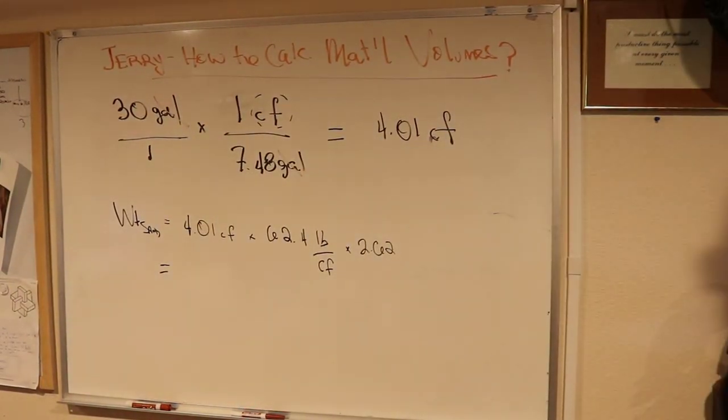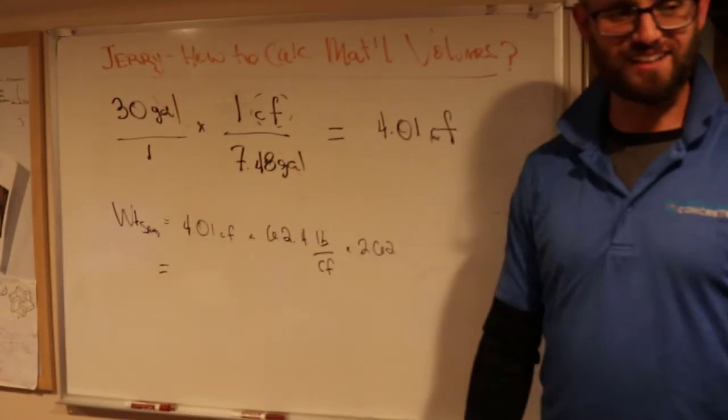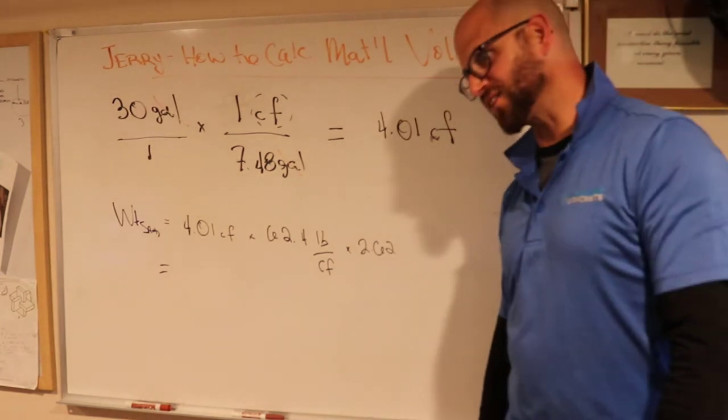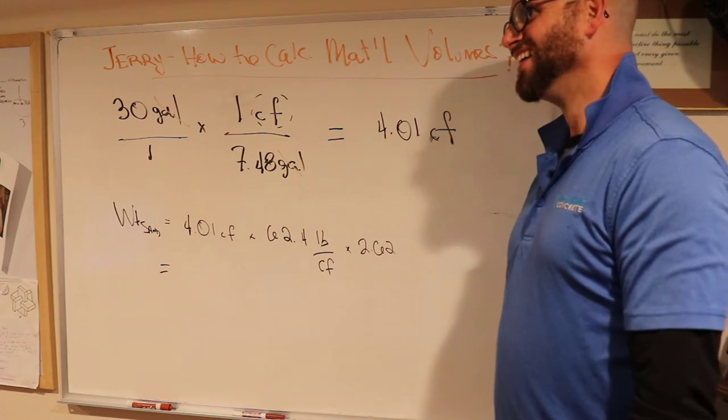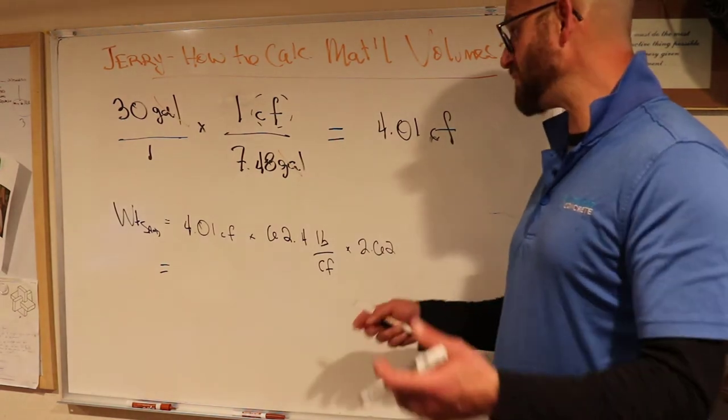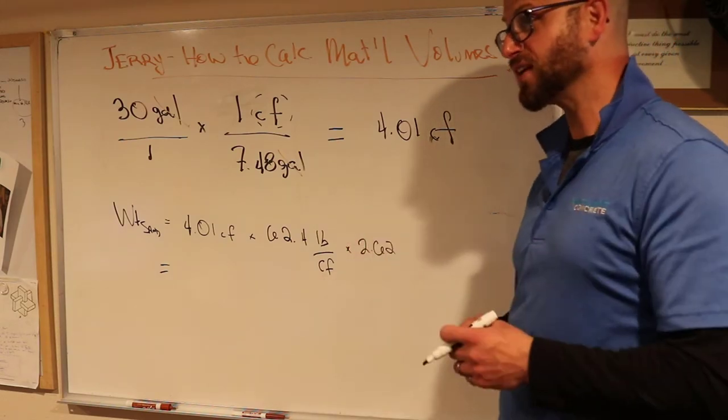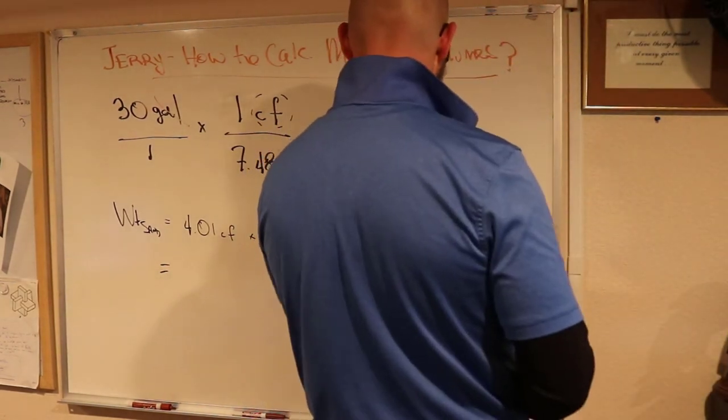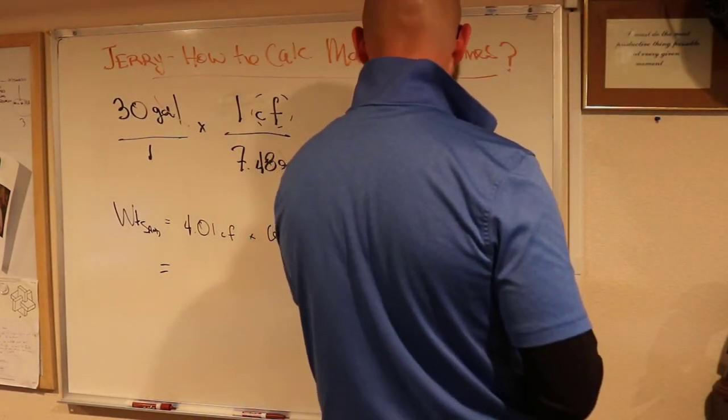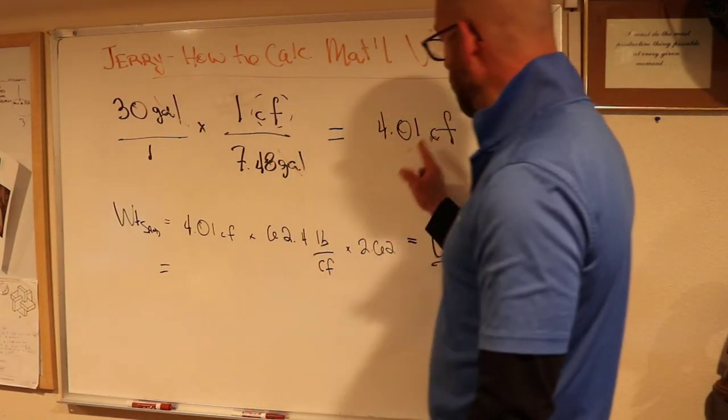That's unitless. And if we multiply all of those through... 62.4 times 2.62 times 4.01... 655, totally off. 5.9, 600 and what? 55. 660 pounds.